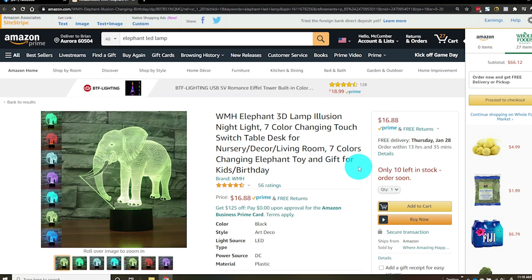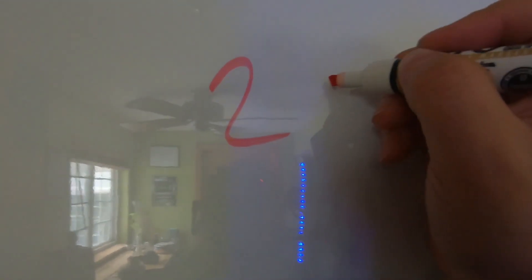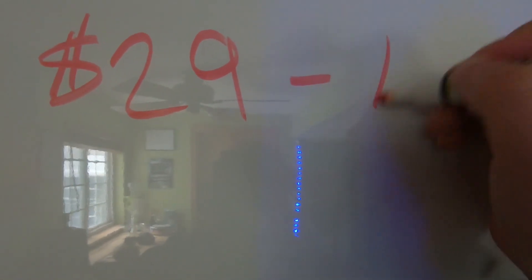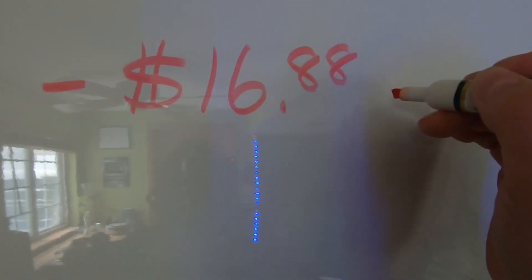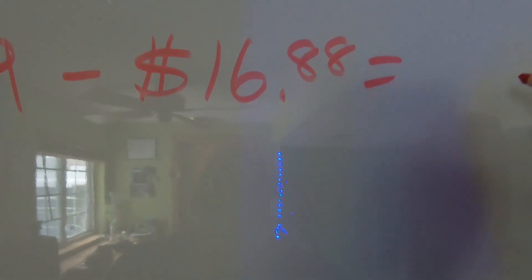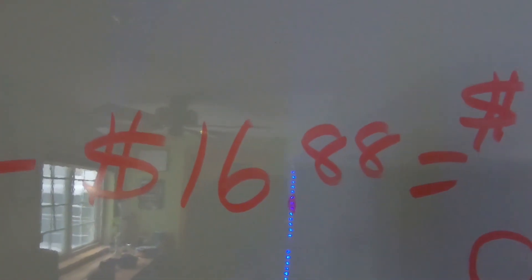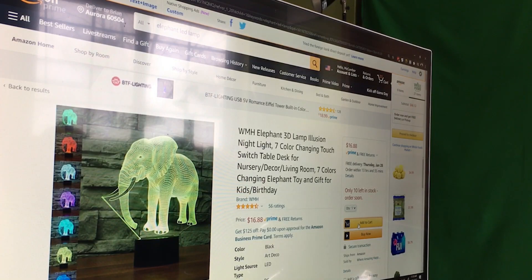You can see the listing price is $16.88. Let's do the math on the whiteboard: $29 minus $16.88 equals $12.12 profit. So $29 minus $16.88 equals $12.12 — amazing. So let's fulfill the order.